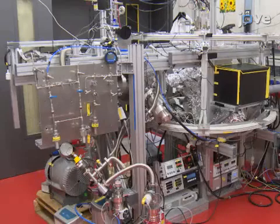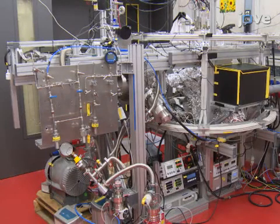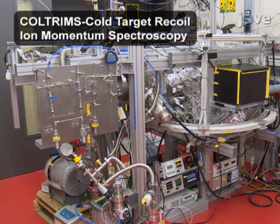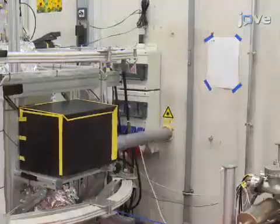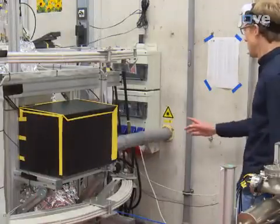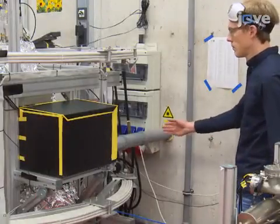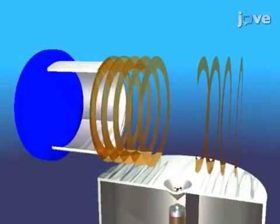The heart of the experiment is a setup for coincident imaging of ions and a femtosecond laser, such as this COLTRIMS apparatus. The femtosecond laser beam enters from an adjacent room. The basics of the COLTRIMS technique are depicted in this animation.